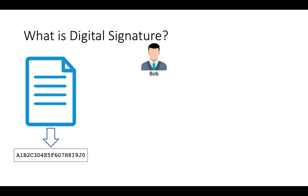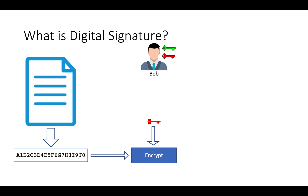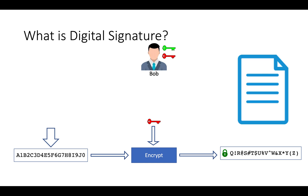If you change even a single bit in the document, its hash value gets changed. Now Bob will encrypt this hash. He will bring out his pair of keys, and he will use his private key to encrypt the hash. He provides both the hash and key to the RSA formula and gets the encrypted hash. Then Bob takes the original document and inserts the encrypted hash into it. This is how Bob applies a digital signature to the document.